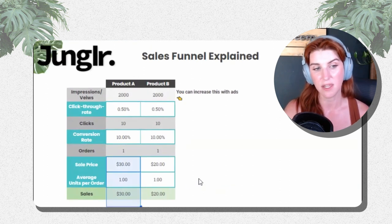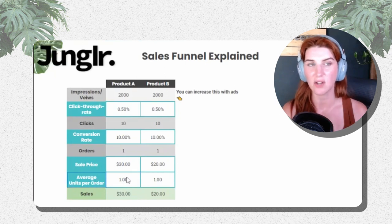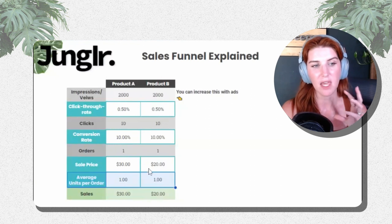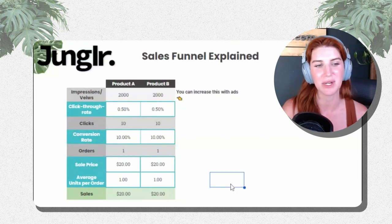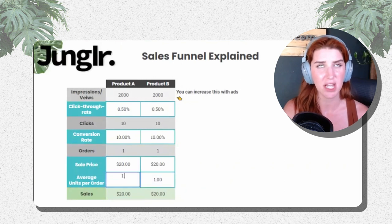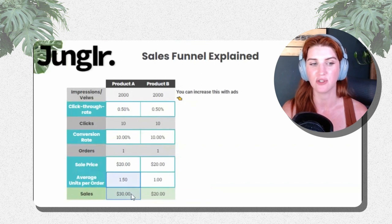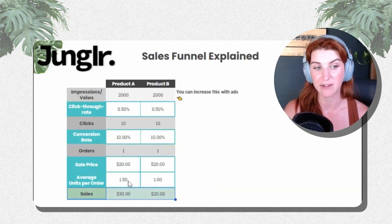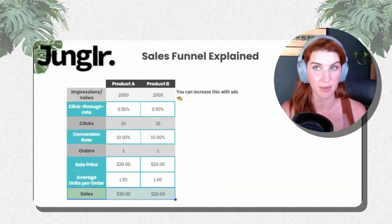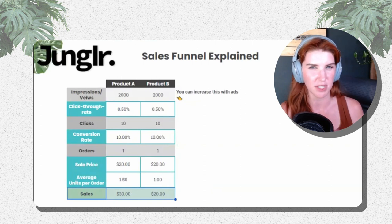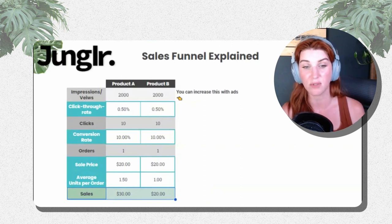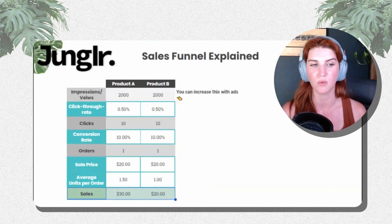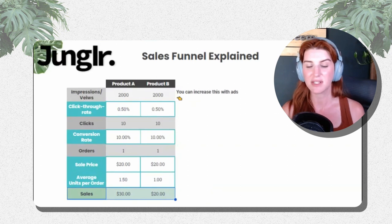The other thing not often talked about is how many units people purchase when they opt in for an order. Say both products have a $20 price point, but for every other purchase on Product A you get an additional unit — that will also influence your total sales. You can do this with Subscribe and Save, on variations, or by creating incentives for multiple-unit purchases. It doesn't always work out, but there are certain times where you can increase the average units per order.